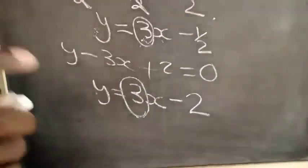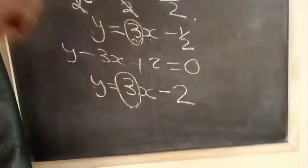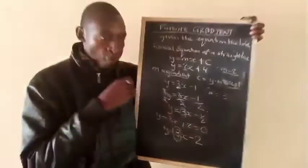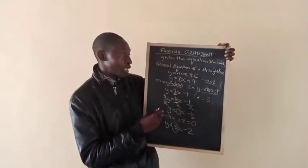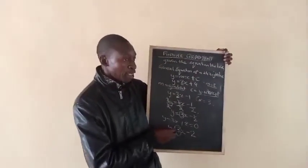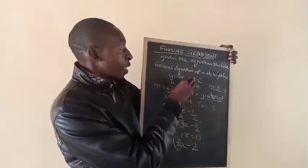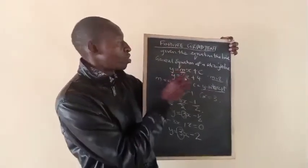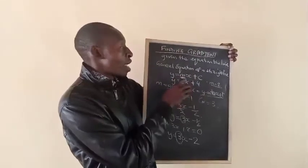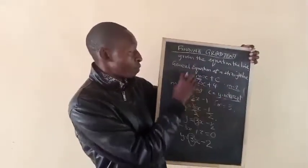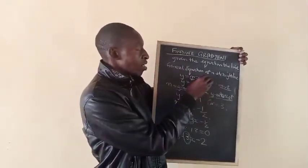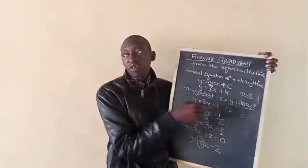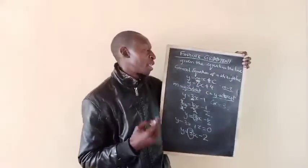The coefficient or the number that we have before x, which is the coefficient of x, kana kuna y ndiyo inenge hiri gradient. Par general equation yedu ndiyo inenge hiri m. M ndiyo gradient yedu equation. C no y-intercept.